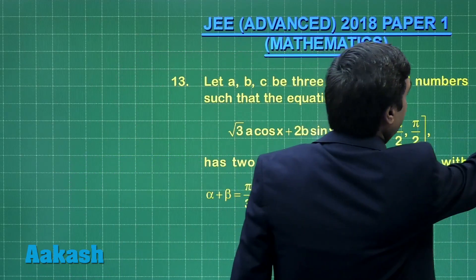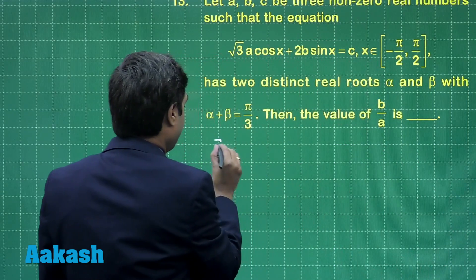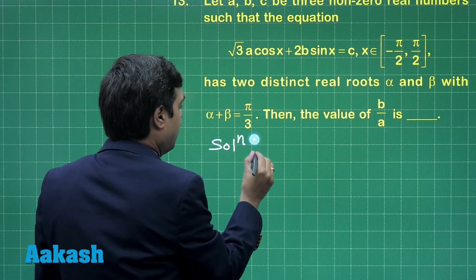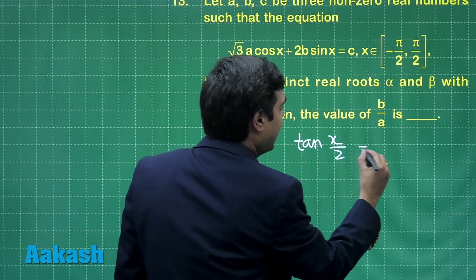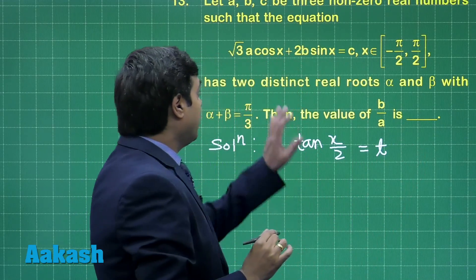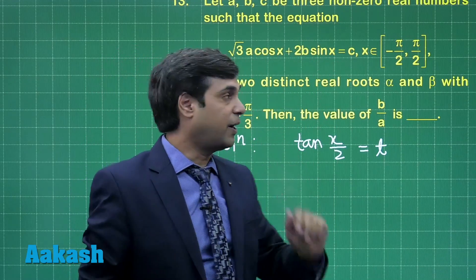Starting this one by considering tan(x/2), let us say as t, and write cos(x) and sin(x) in terms of tan(x/2).